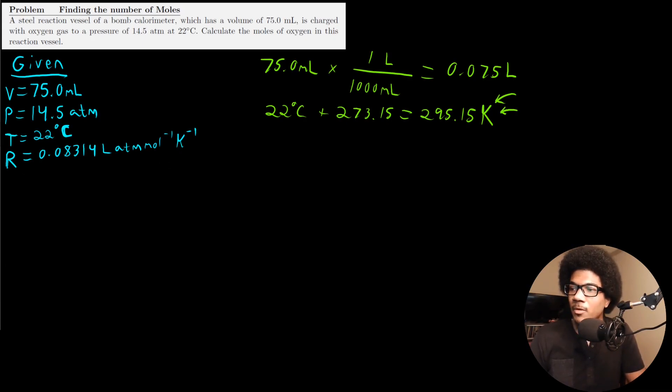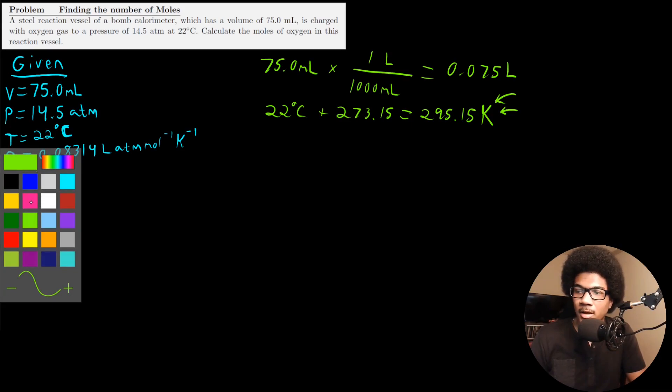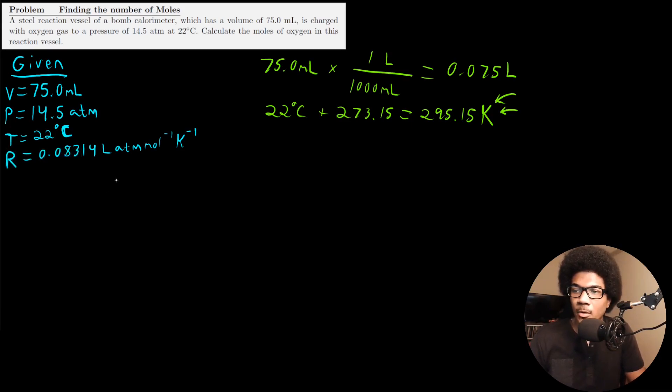Now that we've done these conversions, we've got everything we need to plug in and solve here. Considering our ideal gas law PV is equal to NRT, we just want to realize what we're solving for, isolate it algebraically and plug it in. We're trying to calculate the number of moles of oxygen. So we want to isolate n in the ideal gas law. So we do our algebra: n is equal to PV over RT.